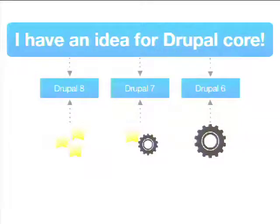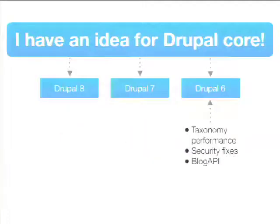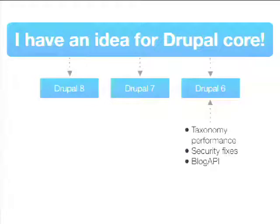To get something new and shiny and big into Drupal 6 is likely almost impossible. For something new and shiny, you'd better go to Drupal 8. If you want to get something new and shiny into Drupal 7, there's a process for that we'll get to shortly. Things getting into Drupal 6 are like taxonomy performance improvements — though it's kind of funny because we fixed some taxonomy speed problems in the latest Drupal 6 release, and with that fix introduced some taxonomy memory problems.